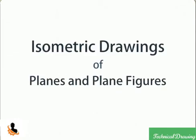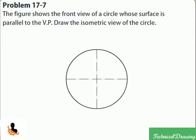Isometric projections. The figure shows the front view of a circle whose surface is parallel to the VP. Draw the isometric view of the circle.